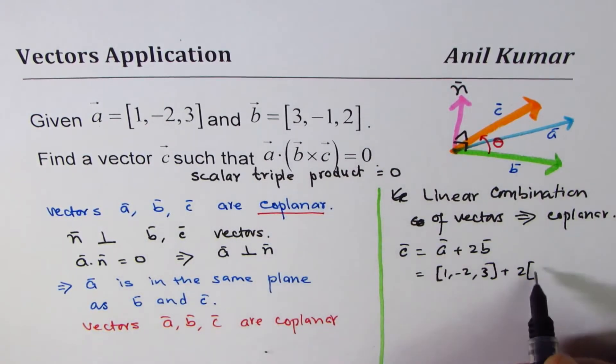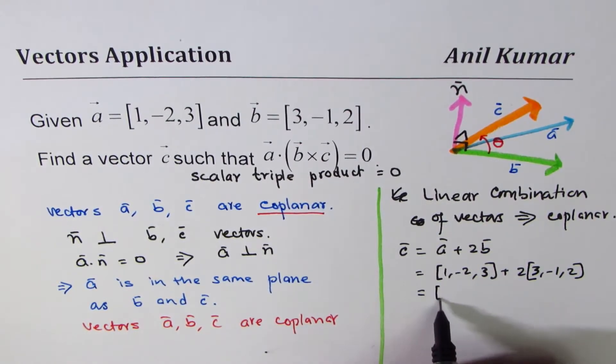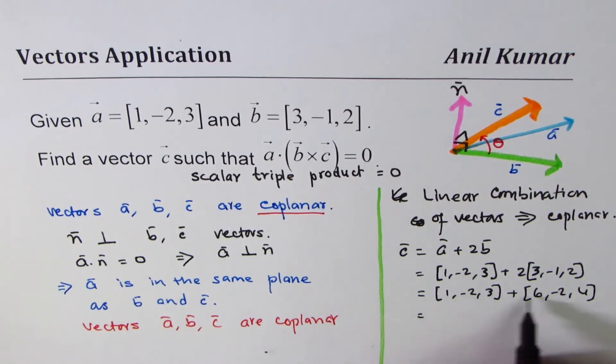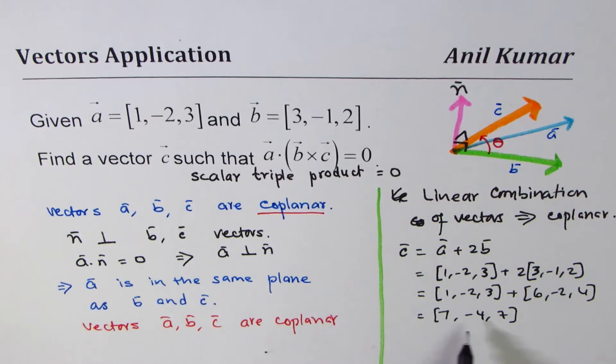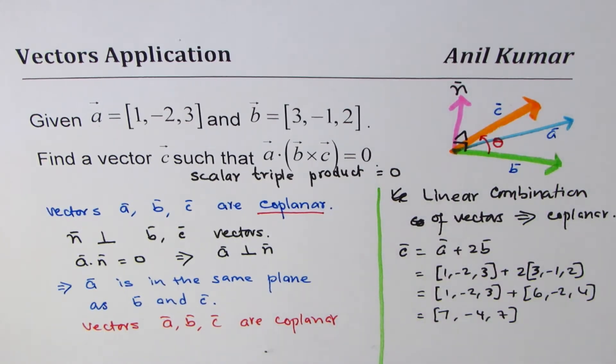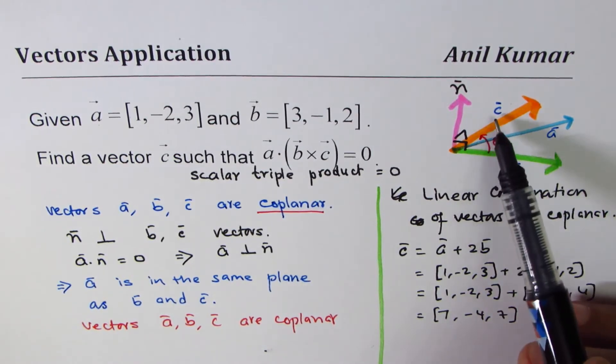So c equals [1, -2, 3] plus 2 times [3, -1, 2], which becomes [1, -2, 3] plus [6, -2, 4], which is [7, -4, 7]. Vector c could be [7, -4, 7]. You could have many such vectors since in a plane there are infinite vectors. The plane identified by vector a and b will have a lot of vectors like c.